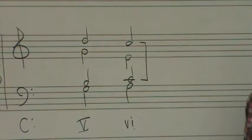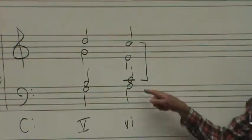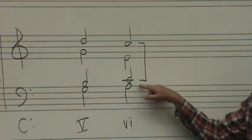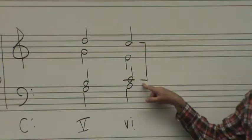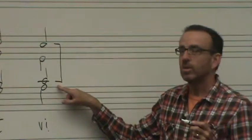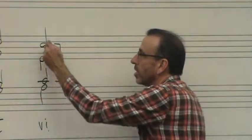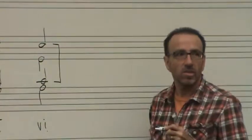And so this is one of the exceptions to root position doubling. Remember, normally in a root position triad we would double the root. But in a deceptive progression or cadence, traditionally the third of that chord is doubled in the sixth chord.